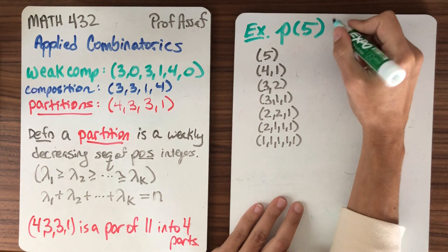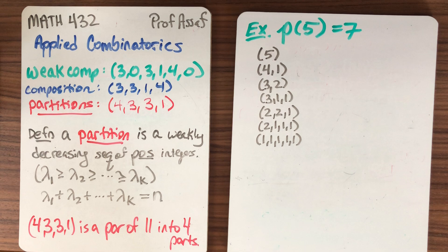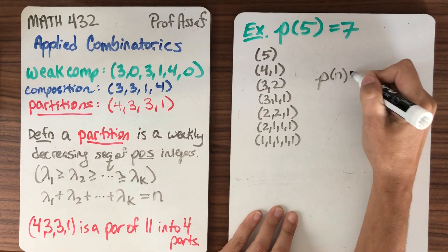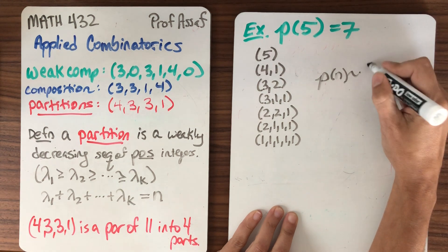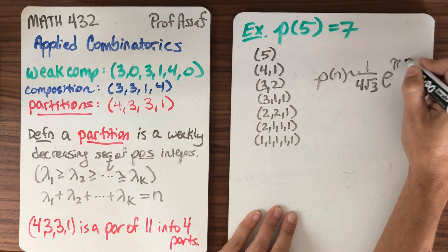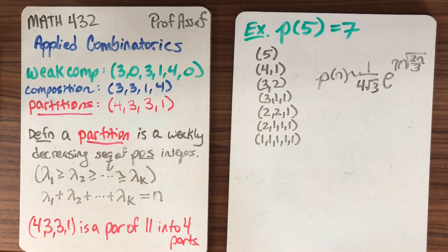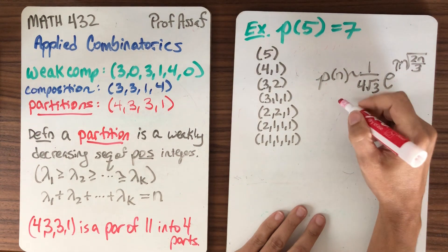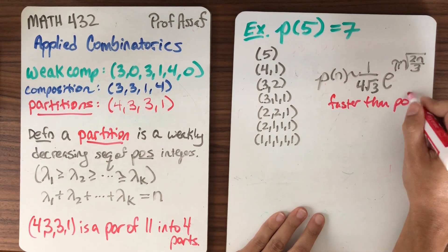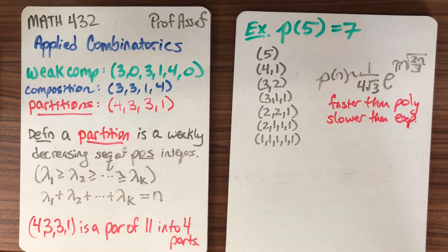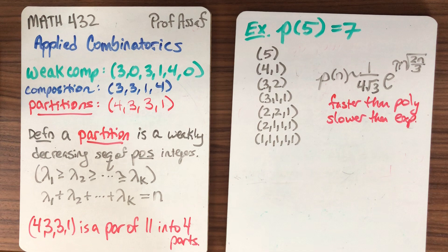So how many partitions of 5 are there? Well, there's 7. Whenever the number 7 comes up when you're enumerating something, you should maybe panic that there's not going to be a closed formula. And in this particular case, there isn't. There is no closed formula for the number of partitions of n. We do know an asymptotic formula. So p of n is approximately equal to 1 over 4 root 3, e to the pi square root of 2n over 3. So this is faster than a polynomial. So faster than polynomial growth. And it's slower than an exponential because of that square root. So it's somewhere in between.